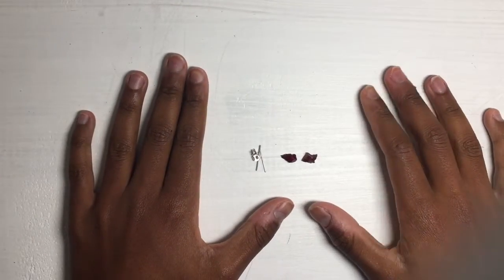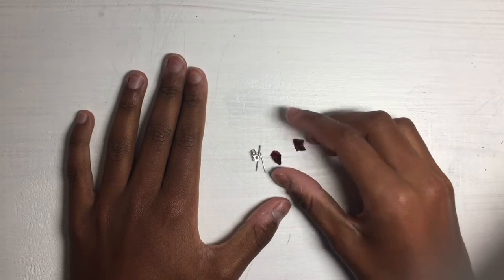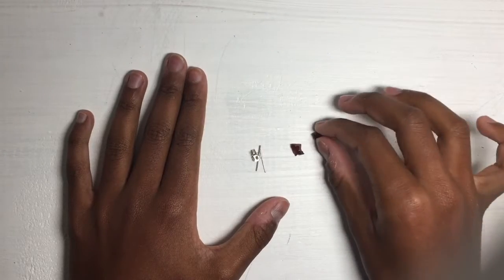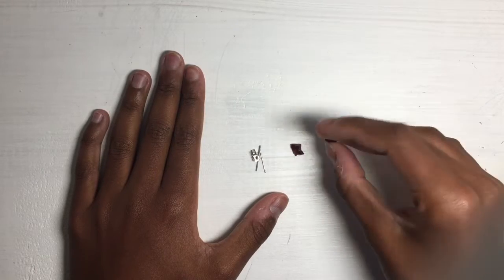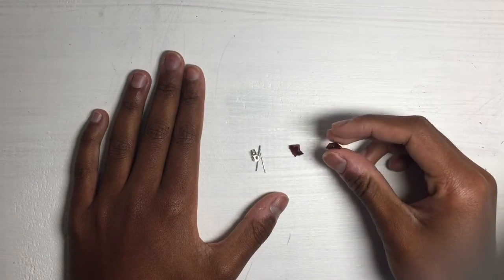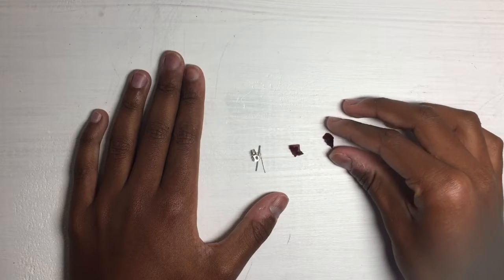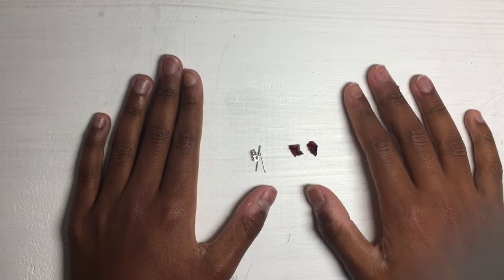To be clear, this is sap and not amber because it hasn't fully hardened into its rock-like state although it is quite hard. It is a little bit brittle so I will have to handle it with care but they should look pretty good.